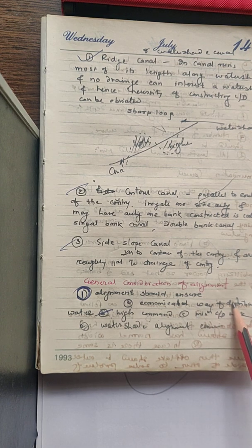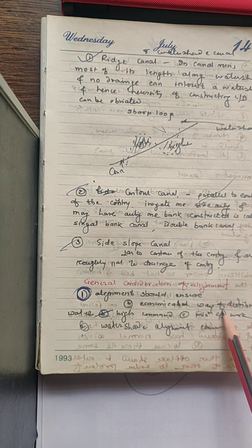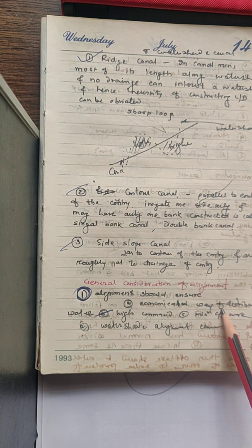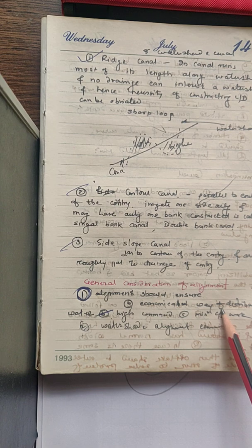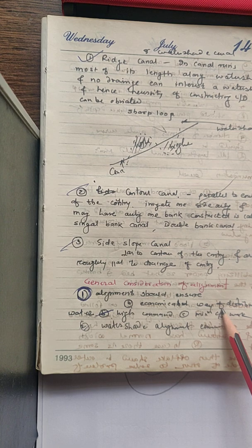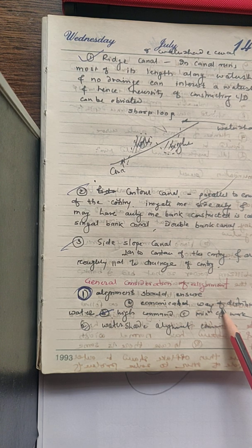Economical way means alignment of the canal should be such that distribution of water should be economical. This depends on various factors: whether it is a ridge canal, whether it is a contour canal, whether it is a side slope canal, and what are the number of structures to be constructed — based on that, the cost will be decided.